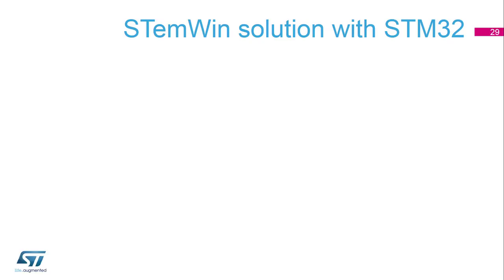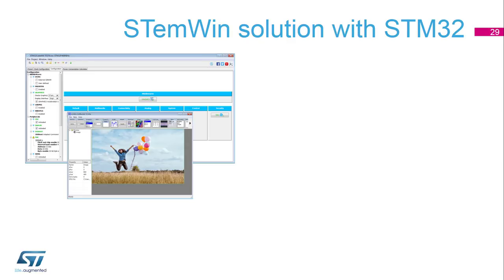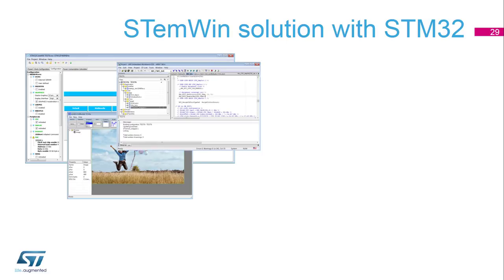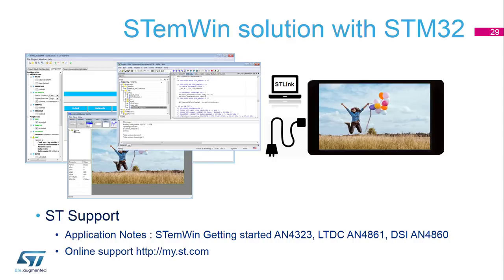Developing an application with STMWIN and the STM32 ecosystem means first configuring all peripherals of the chosen board using the CubeMX tool, then setting up the graphical user interface, then generating the code — for example for the IAR IDE — and finally flashing directly on the board using the STLink included on the board, or an external one for a custom board. For more information on STMWIN, refer to application note AN4323, along with application notes on LTDC rendering and DSI. For other information or issues, contact ST support at my.st.com.